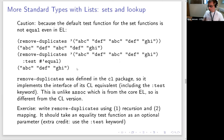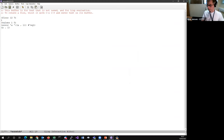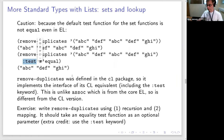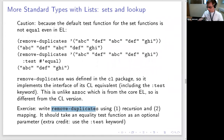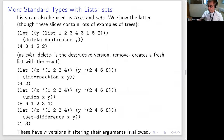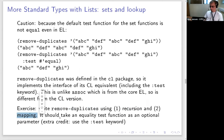An important caveat: `remove-duplicates` and `delete-duplicates` (imported from the CL compatibility package) use `eql` as their test function, even in Emacs Lisp. So to make them work properly with strings, you must supply a `:test #'equal` keyword. As an exercise, try implementing `remove-duplicates` yourself using a recursive version and one using mapping — it's quite an interesting exercise.